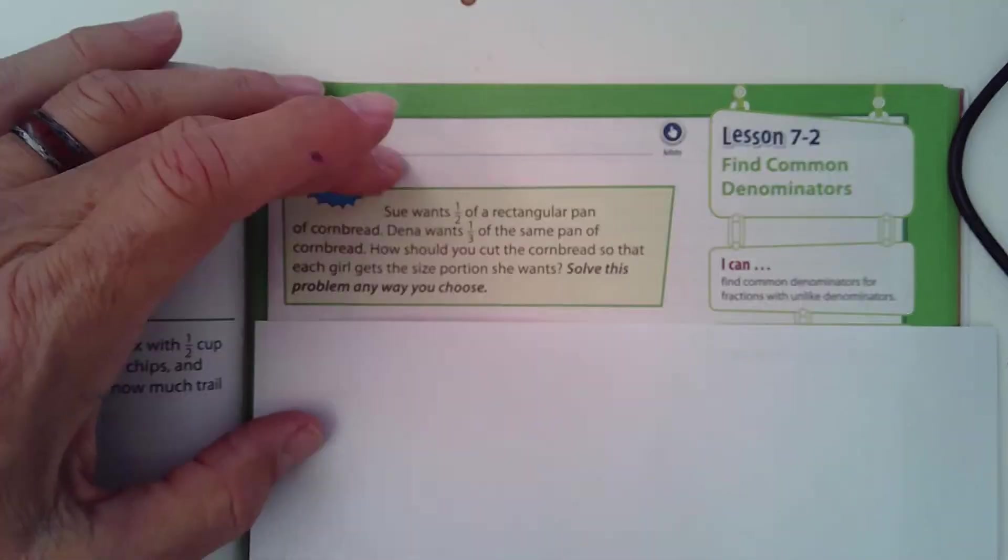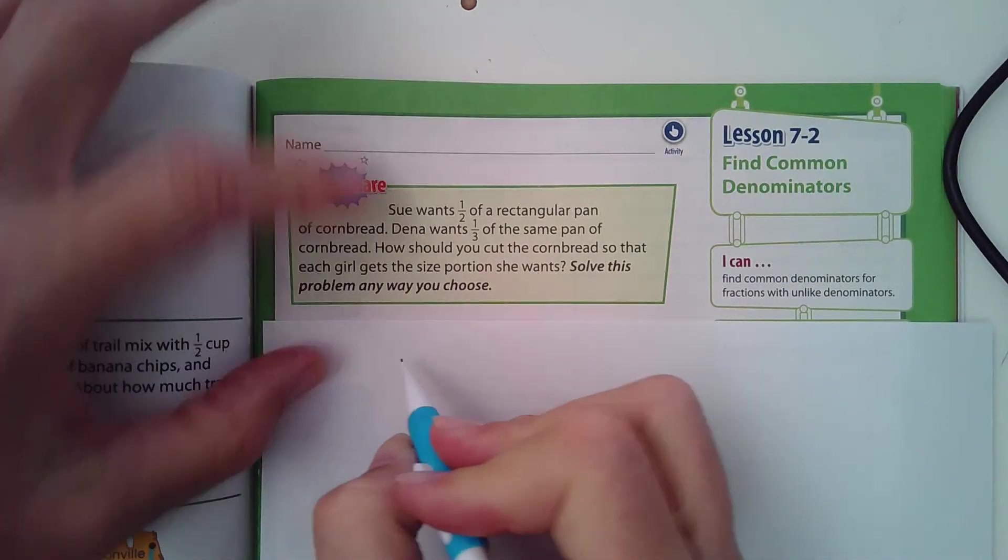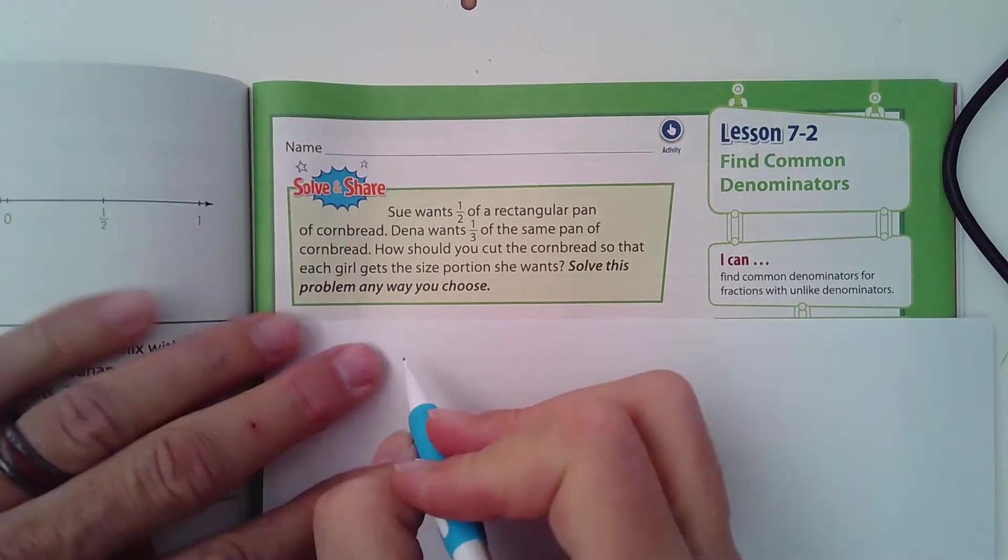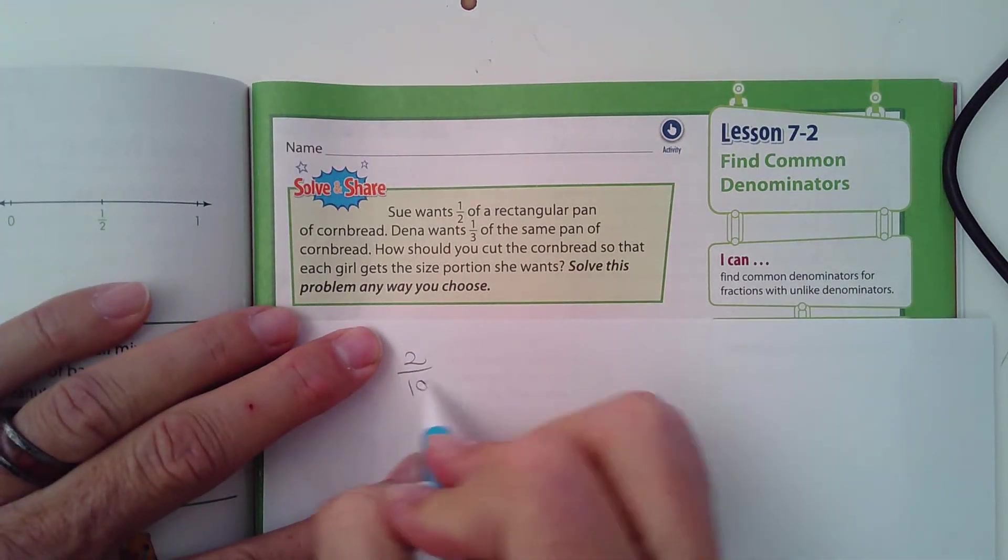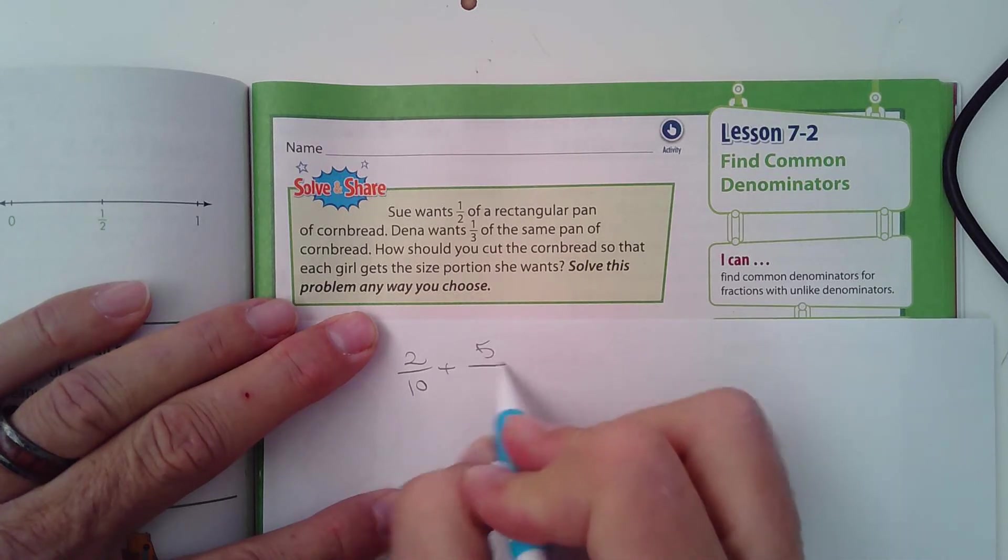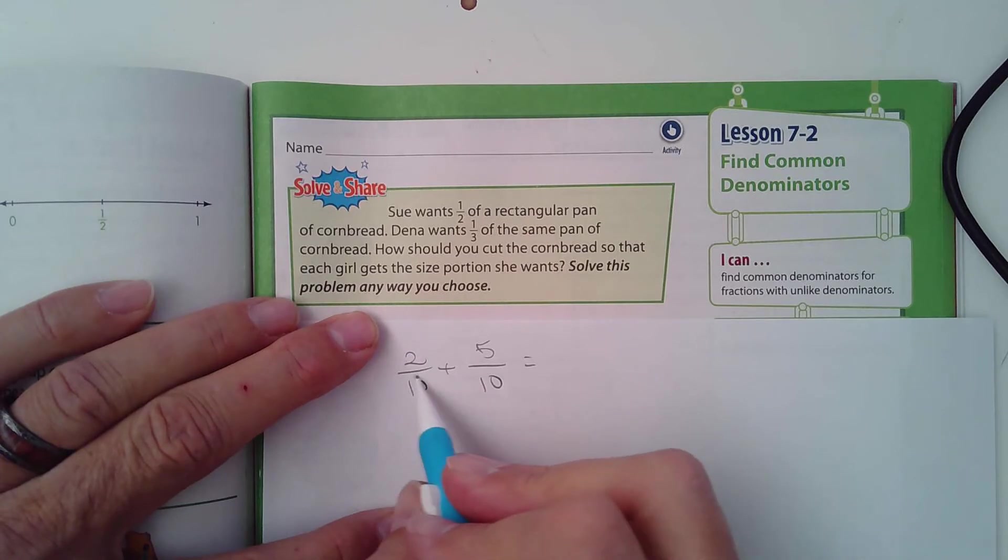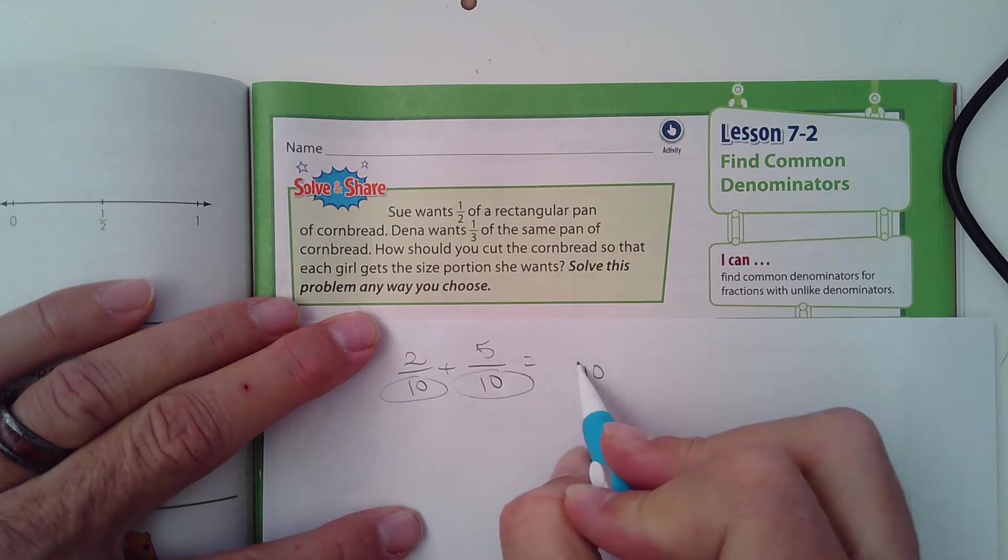For example, if I had a fraction, let's say 2/10 plus 5/10, I could add those together because they have the same denominator. How would I do that? Well, the denominator doesn't change. The two and the five I would just add together, and that would become 7/10. Hopefully you guys remember that.